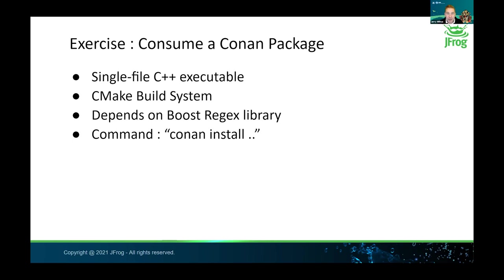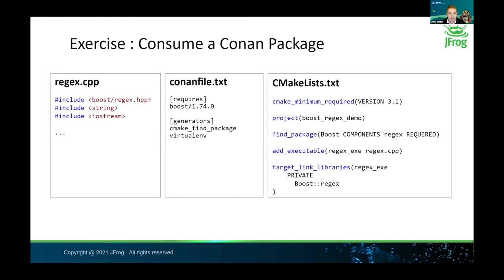For our first exercise, we're going to demonstrate a seemingly simple goal: get an open source dependency from Conan Center and use it in our CMake project. The open source dependency happens to be Boost Regex — this is relevant because getting and using Boost libraries has historically been a non-trivial endeavor for most developers. Here we'll show how Conan makes that process easier. The key command we're going to take away from this exercise is Conan install.